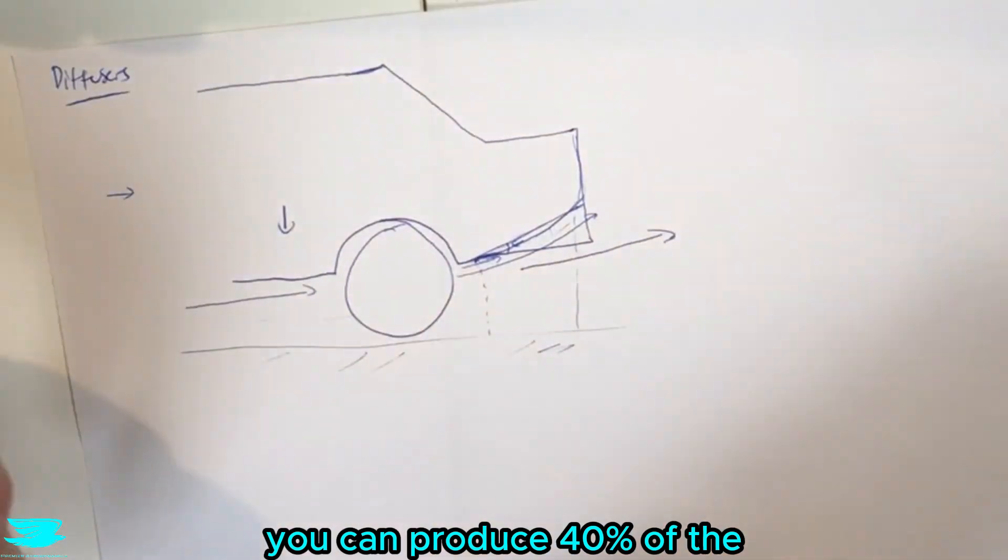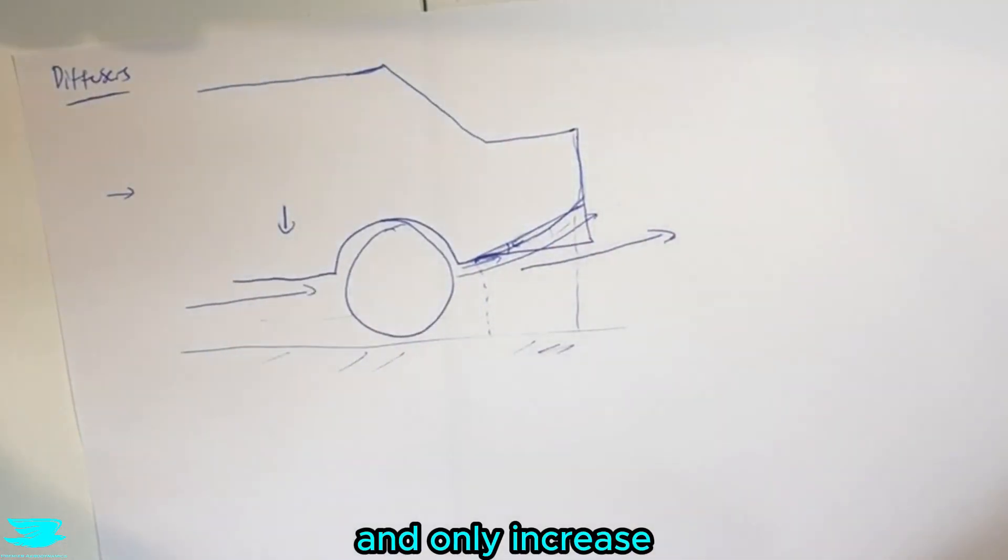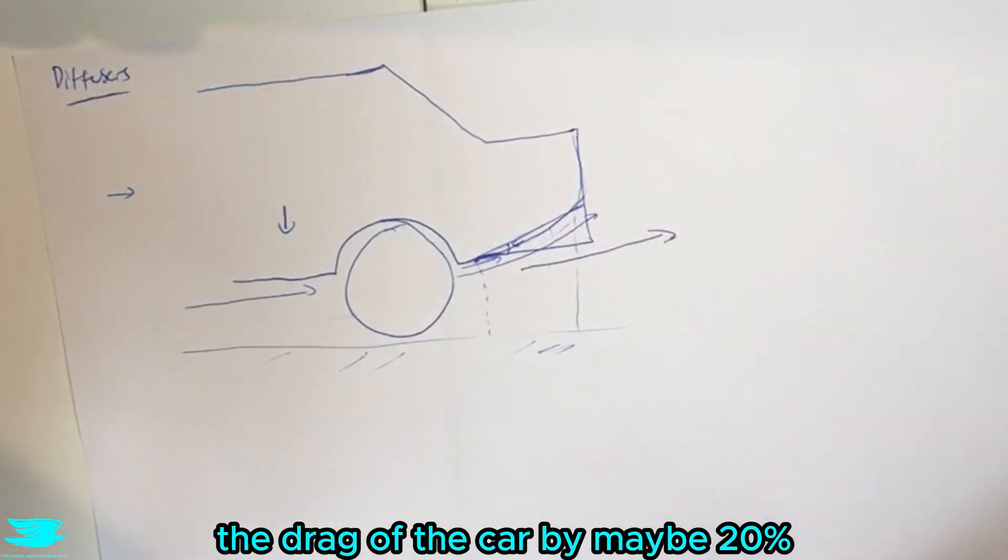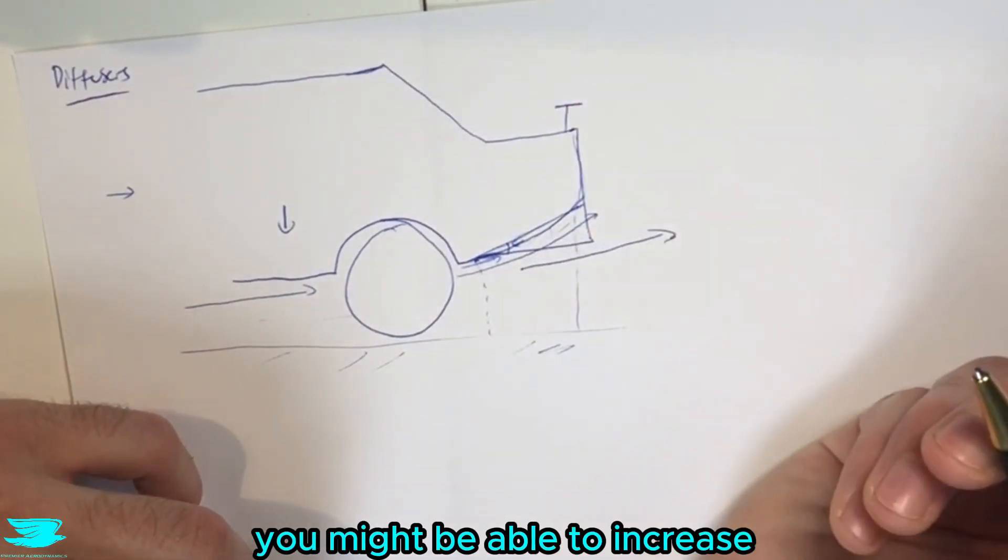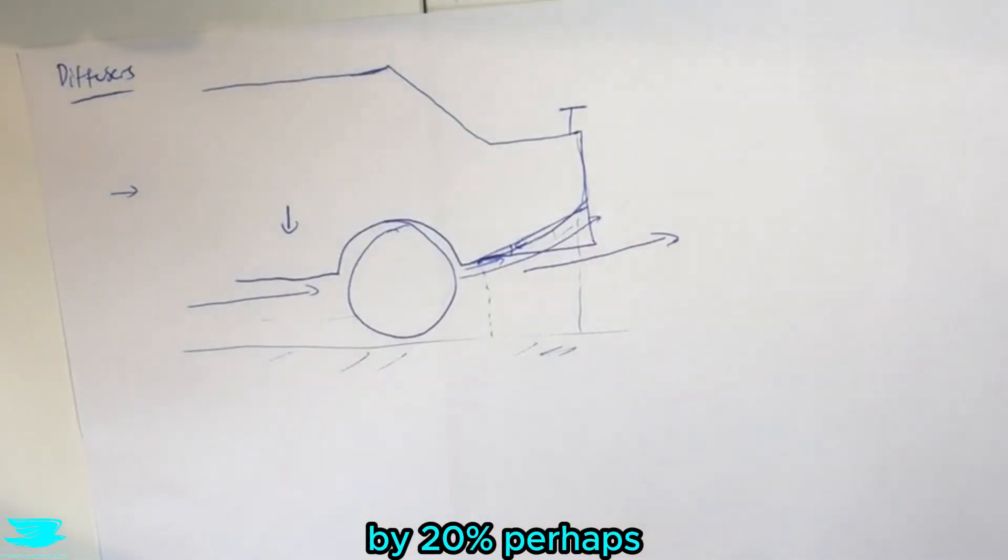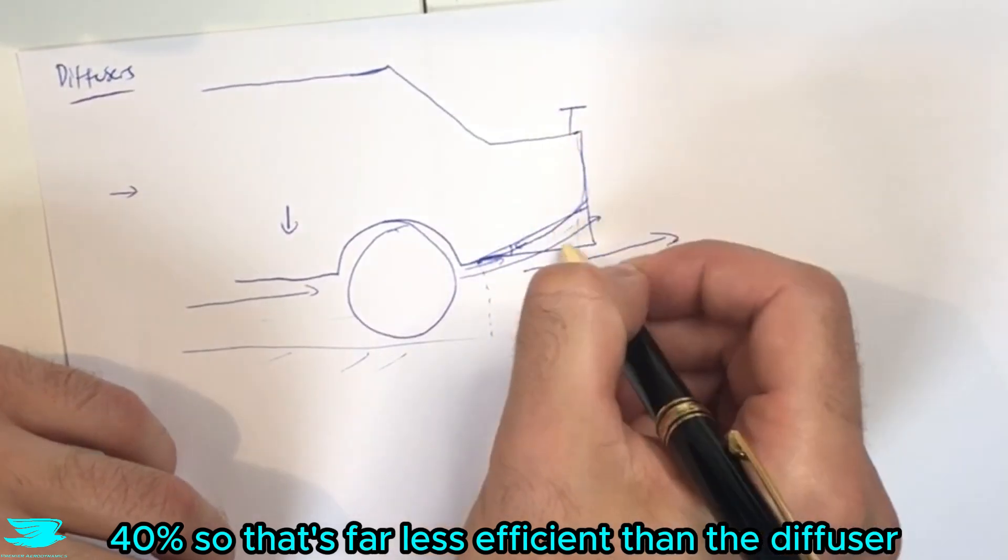You can produce 40% of the entire car's downforce with this object and only increase the drag of the car by maybe 20% or 10%, as opposed to a rear wing if you had it here - you might be able to increase the downforce of the car by 20% perhaps but the drag increases by 30-40%, so that's far less efficient than the diffuser.